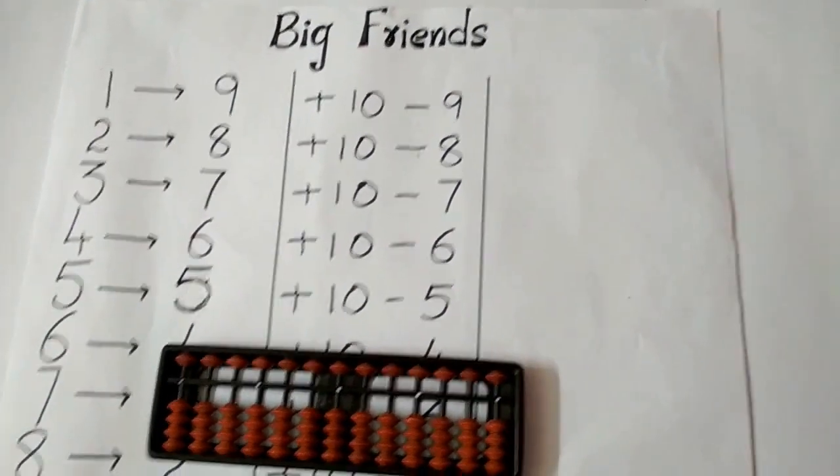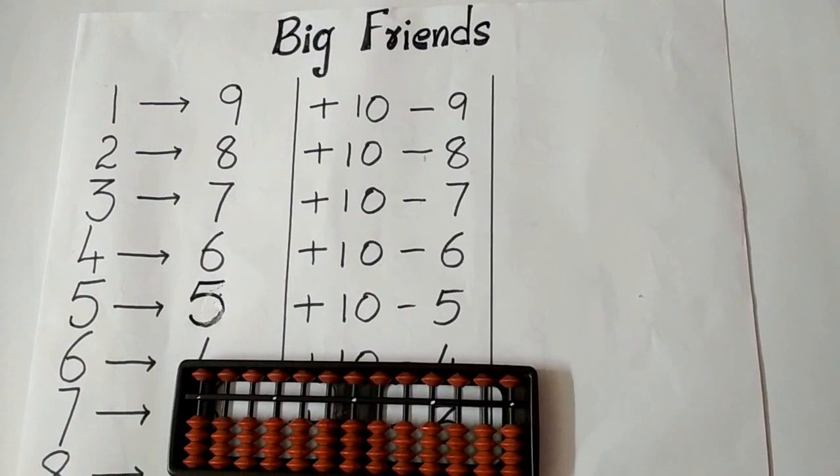In big friends, 10 is the boss and whereas in small friends, 5 was the boss.